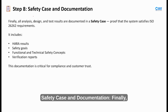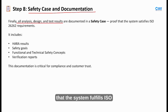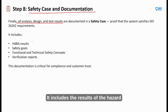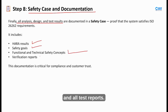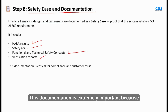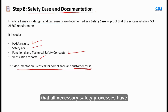Step 8: Safety Case and Documentation. Finally, everything that has been designed, analyzed and tested is compiled into what's called a safety case. This is a complete body of evidence showing that the system fulfills ISO 26262 safety requirements. It includes the results of the hazard analysis, the defined safety goals, both the functional and technical safety concepts, and all test reports. This documentation is extremely important because it proves to customers, regulators and OEMs that the product is safe and that all necessary safety processes have been followed.